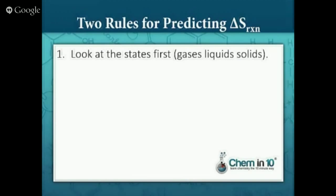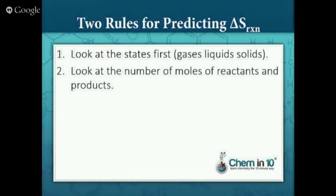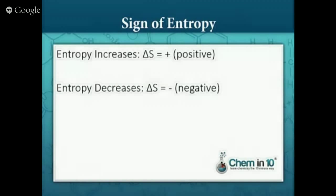There are two rules we use for predicting delta S, the entropy change in a reaction. First, we look at the states — whether we're talking about gases, liquids, or solids. Then we look at the number of moles of reactants and products. When entropy increases, delta S is positive, because delta S is final entropy minus initial entropy. If final entropy is greater than initial, it's positive. When entropy decreases, delta S is negative — final entropy minus initial entropy is negative.